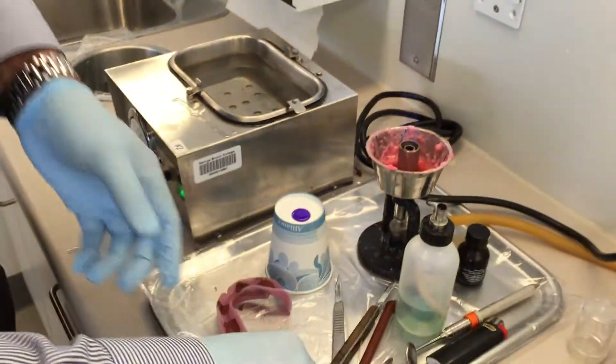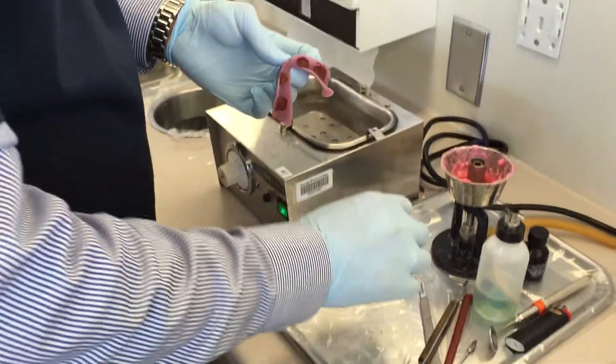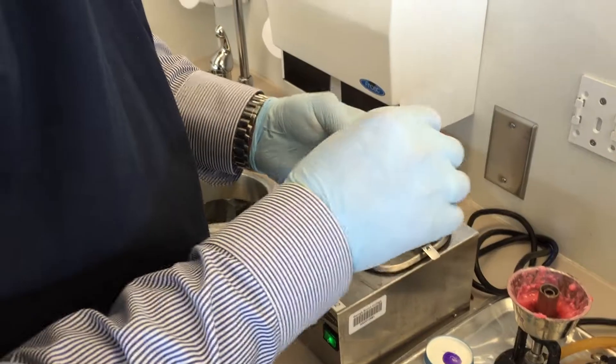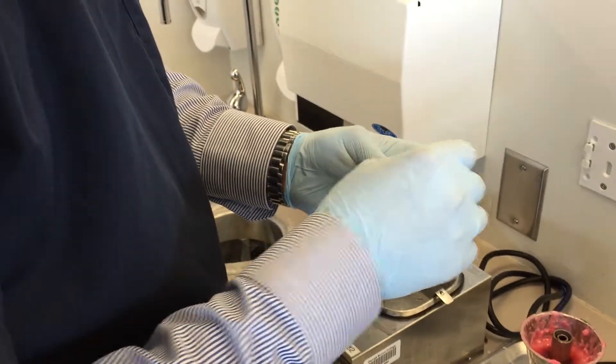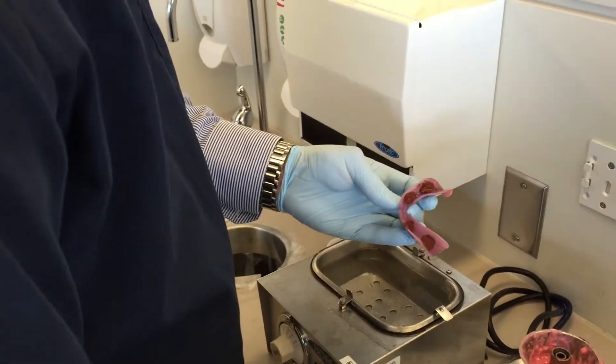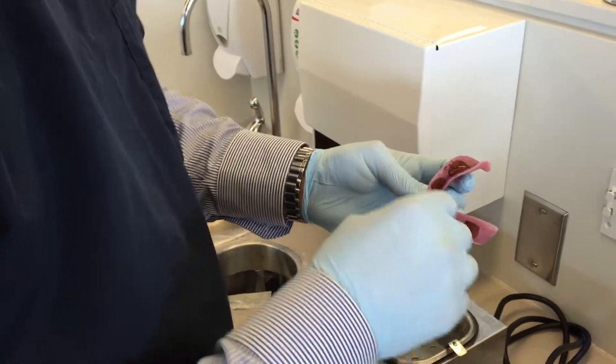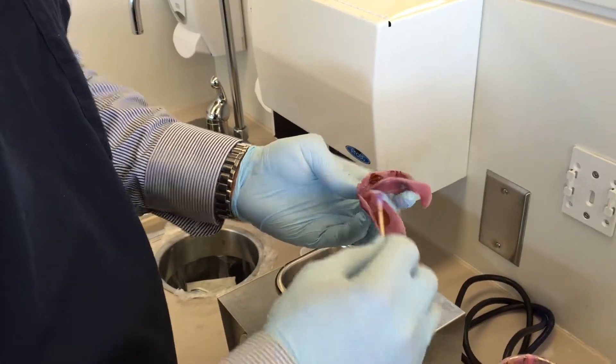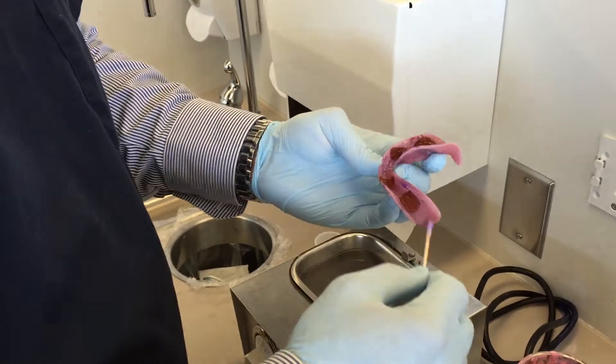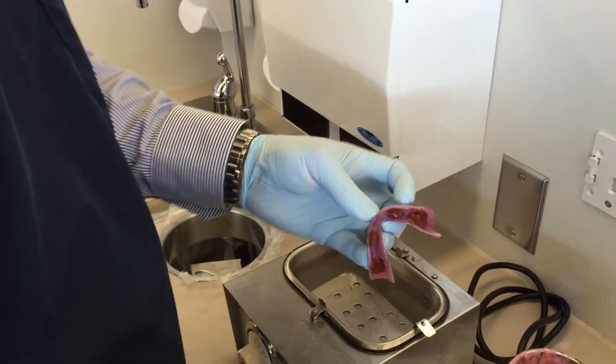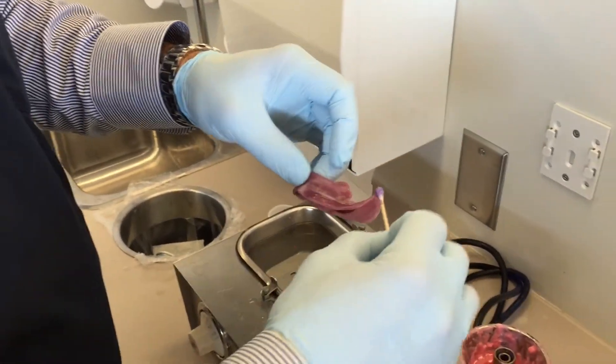And we're going to use the tip of a Q-tip to smear the material around to create a nice bond between the PVS as well as the tray.